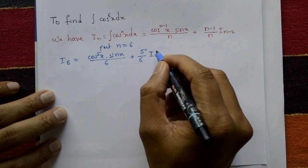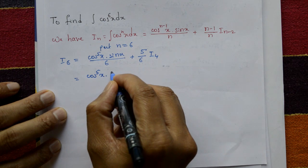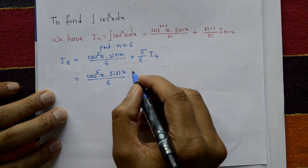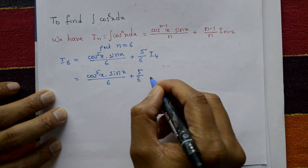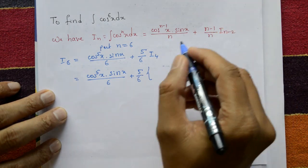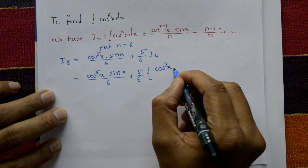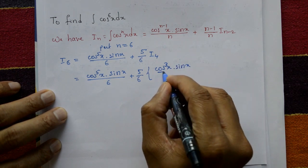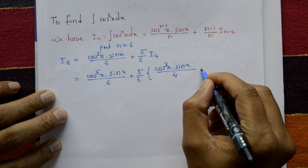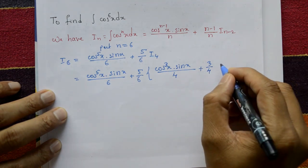Again we find what is I_4. This equals cos^5 x times sin x divided by 6 — no change — plus (5/6) into, putting n equal to 4 in the formula: cos^3 x times sin x divided by 4, plus (3/4) times I_(4-2), which is I_2.